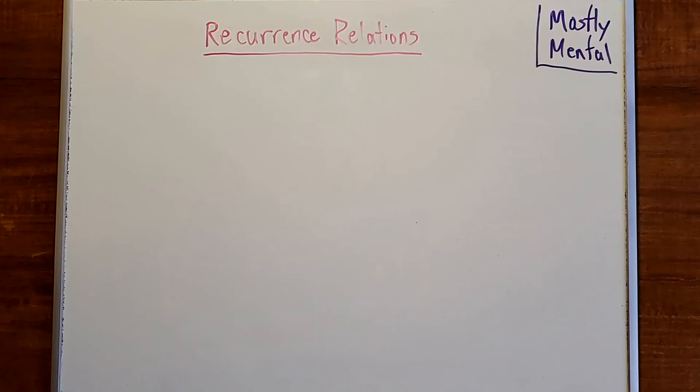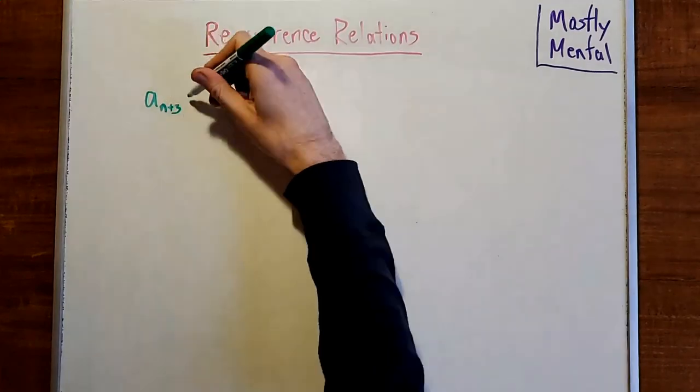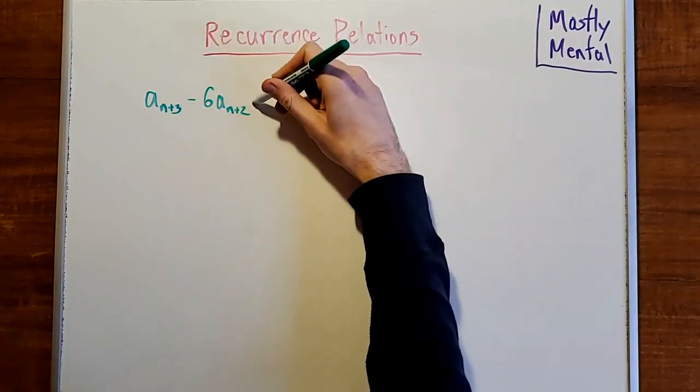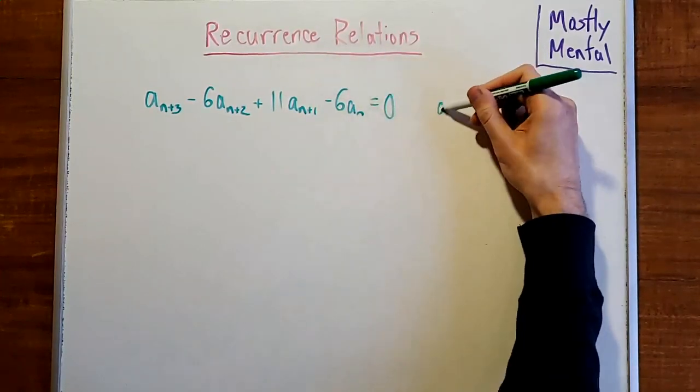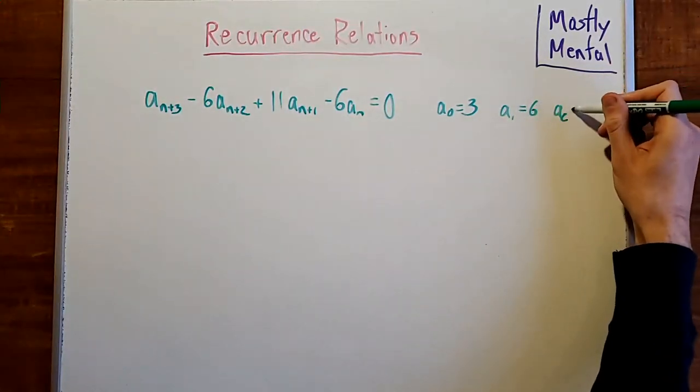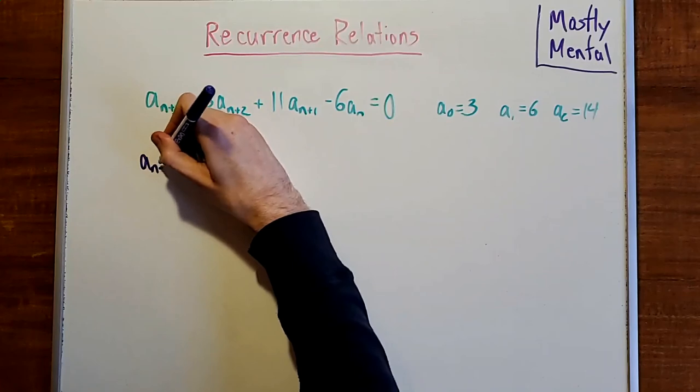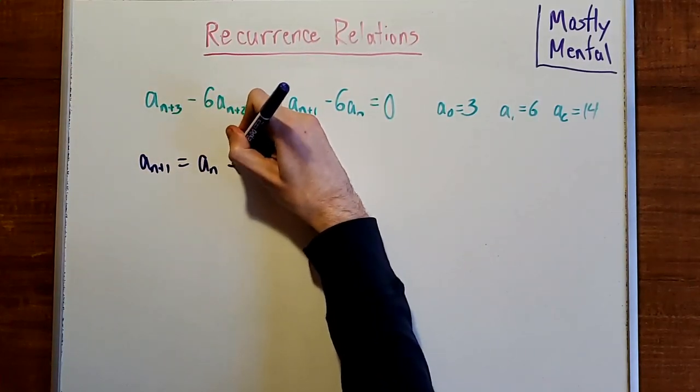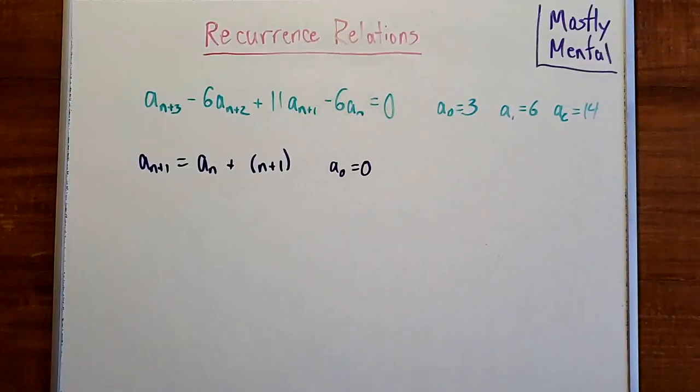Now that I've shown you a few examples of recurrence relations, I'd like to give you a couple problems to play with so you can get comfortable with the ideas. First, let's say a_{n+3} minus 6a_{n+2} plus 11a_{n+1} minus 6a_n equals 0, where a_0 is 3, a_1 is 6, and a_2 is 14. And second, a_{n+1} equals a_n plus n plus 1, where a_0 is 0. I'd love to see your answers, or even just partial work, in the comments below.